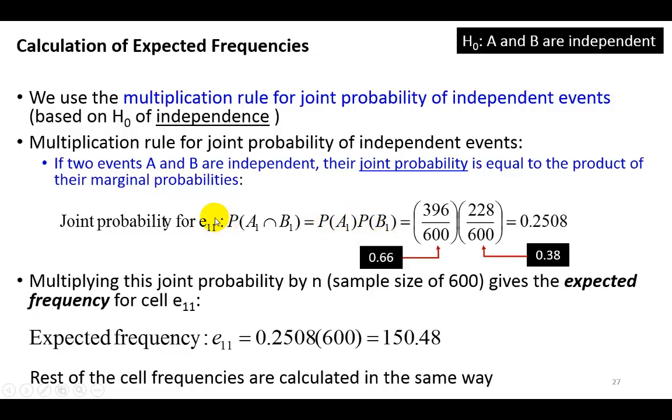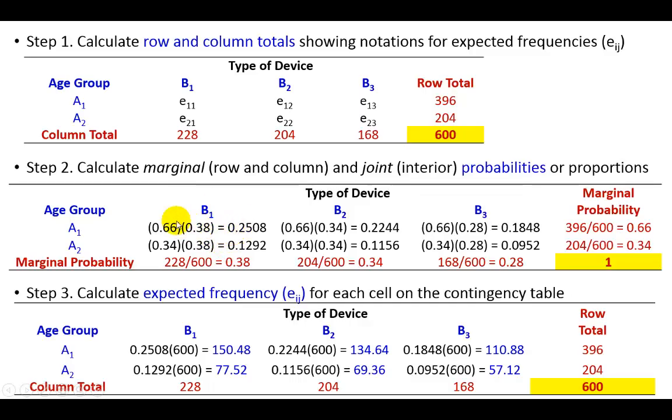And, we're going to then base this on the multiplication rule for joint probability of independent events, for those of you who had some basic statistics prior to this. But, nevertheless, what this rule states is that if two events are independent, then their joint probability is going to be equal to the product of their marginal probabilities. The marginal probabilities are those probabilities on the margin. So, for example, for this entry in cell E11, I go back here, this is cell E11, see E11 right here? So, E11 means first row, first column.